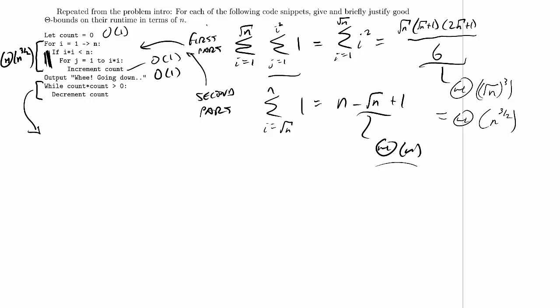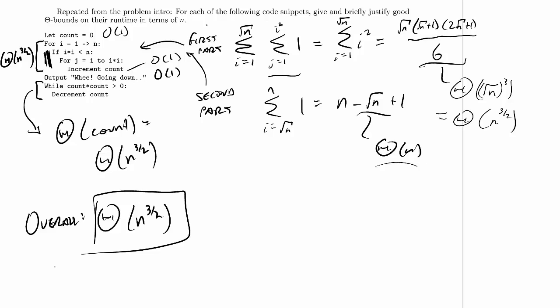So what matters is this will run for theta count time, just like we found last time. And because count is n to the 3 halves, this runs for theta n to the 3 halves time. And we add up 1 plus n to the 3 halves plus 1 plus n to the 3 halves. And we end up with an overall answer of theta n to the 3 halves. So this is our solution to the problem. Okay, that completes this problem. Next, we'll move on to the third part of problem two.